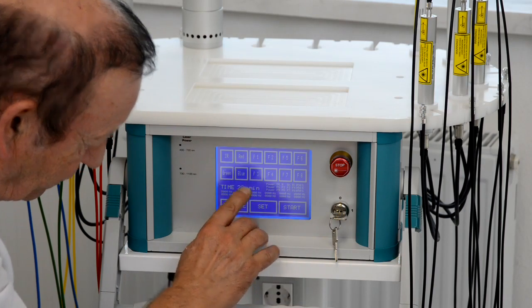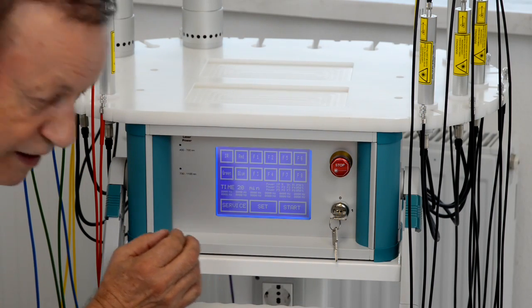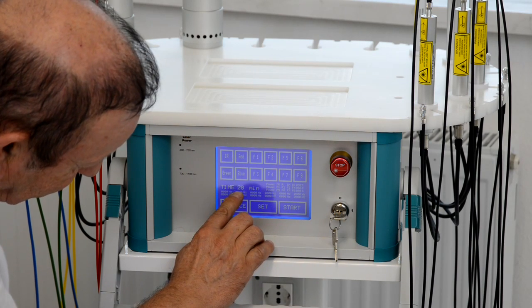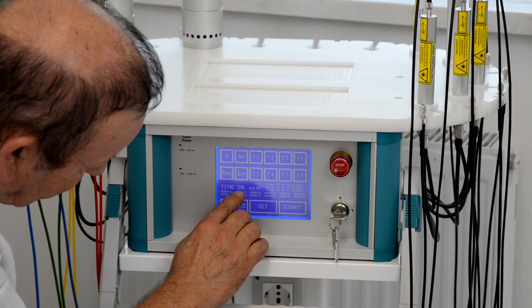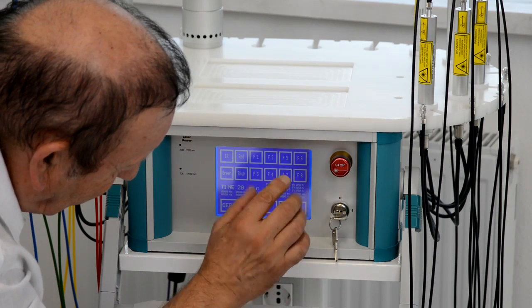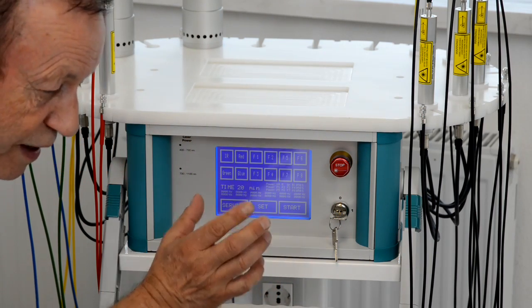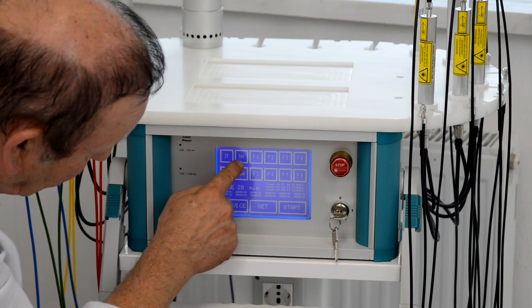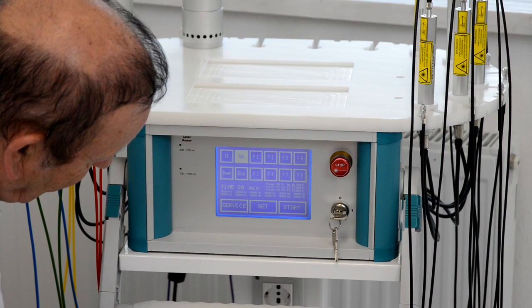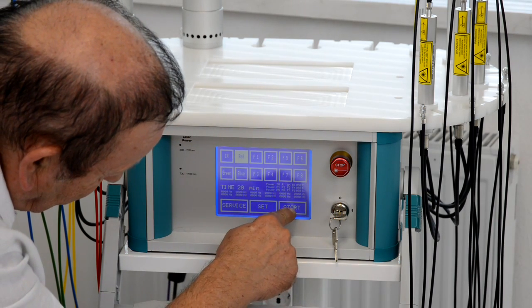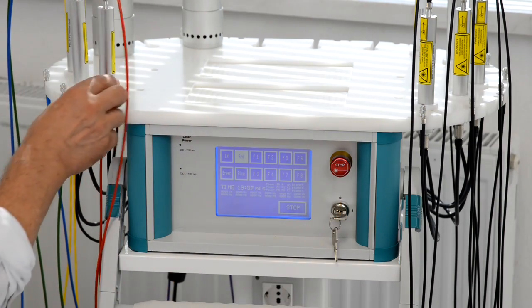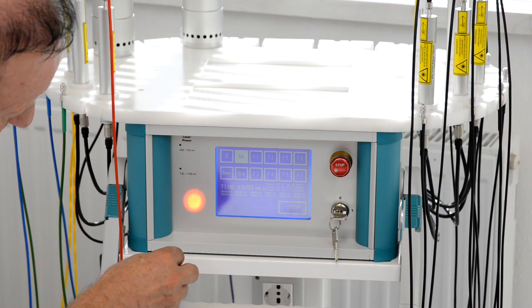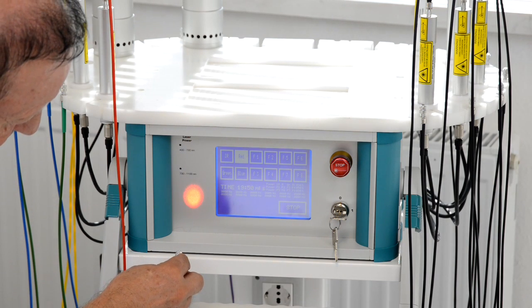After switching on, the device is in a so-called preset. That means we have already preset a running time, a treatment time of 20 minutes and if I switch the lasers on they all will run on 50% power. I show you an example, I switch the red laser on, I press start and now it will work for 20 minutes with 50% power and here you can see the red laser beam.